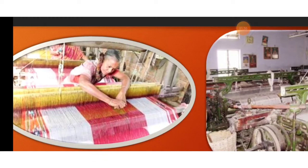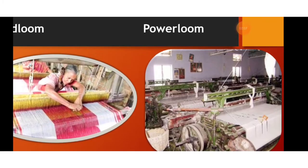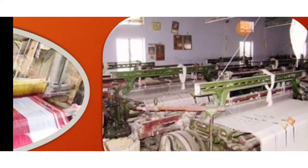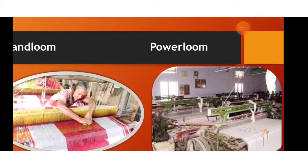The process of intertwining the threads close to each other is done by hand, which is why it is called a hand loom. In the power loom, machines are used to do the same work, and these machines run on electricity.